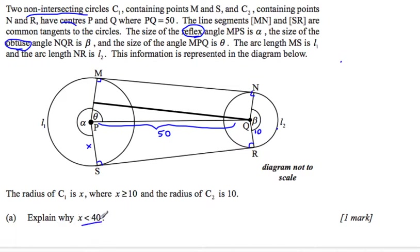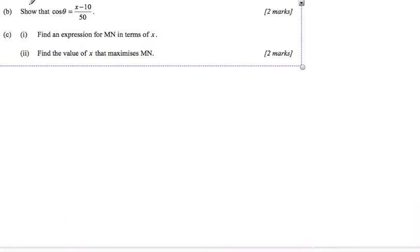Explain why x needs to be less than 40. Well, that comes from the fact that they are non-intersecting circles. Because C1 and C2 are non-intersecting circles, since this is 50 and this is 10, if this radius was more than 40, then the circles would touch. And actually, even if it was equal to 40, hence only the less than.